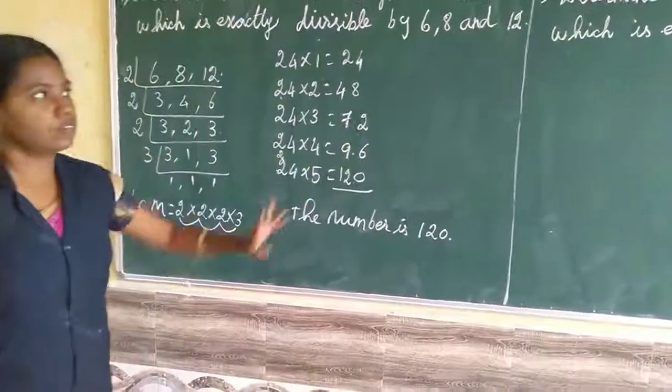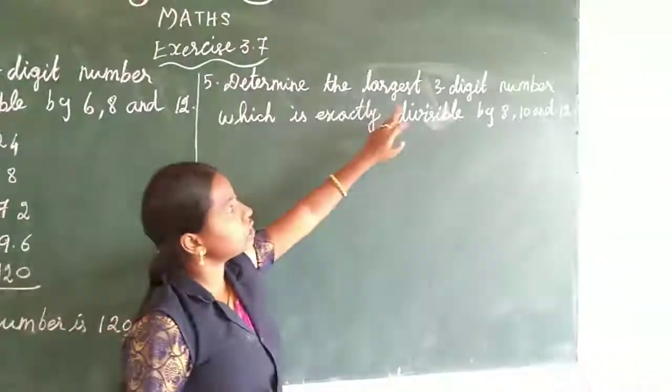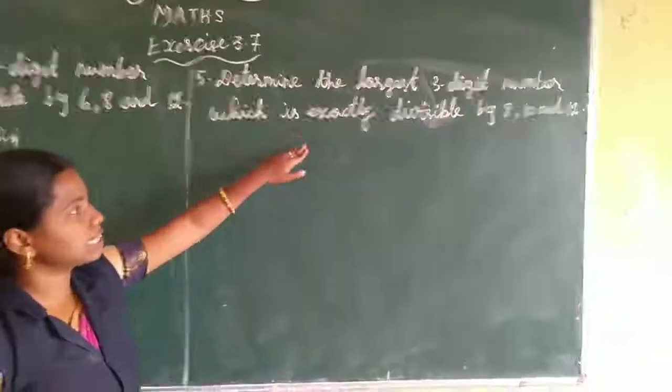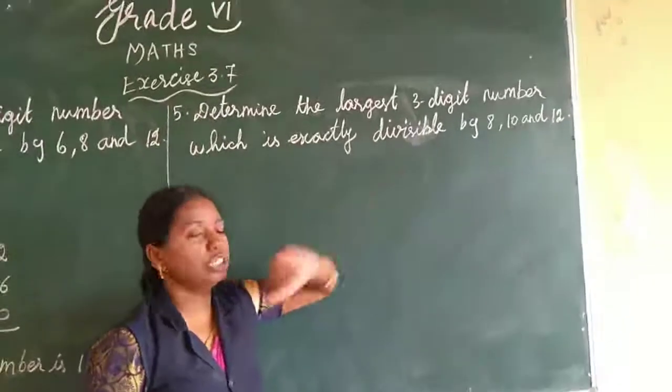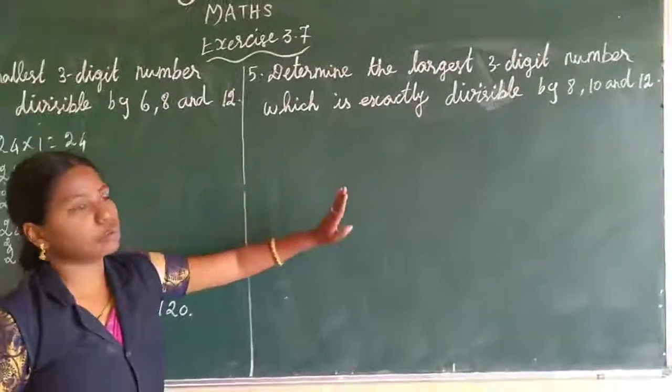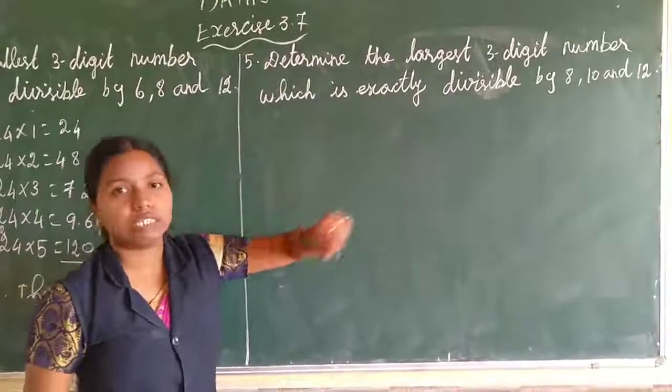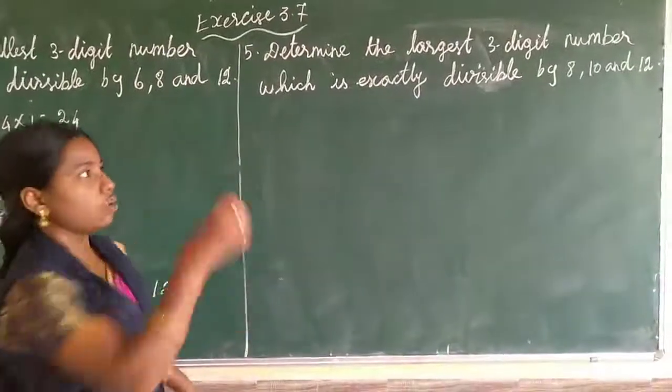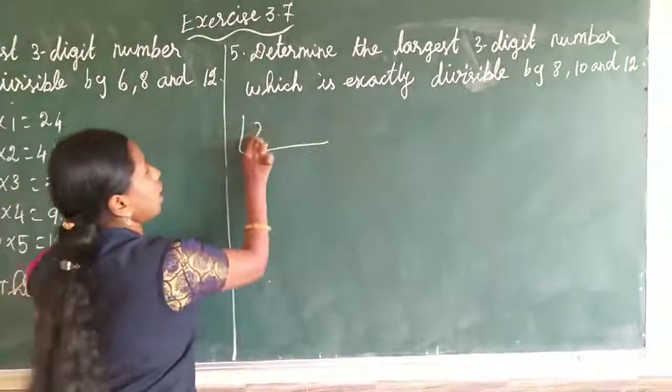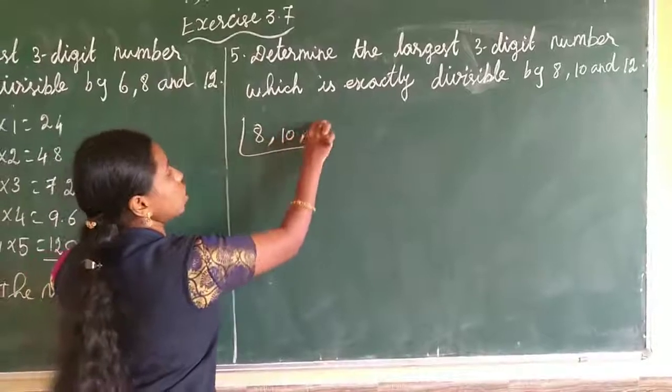Now, I am going to move to the 5th sum. Determine the largest 3-digit number which is exactly divisible by 8, 10 and 12. This is also same procedure only, you have to find out the LCM for the 3 numbers and we will write the tables.